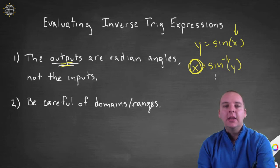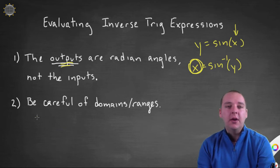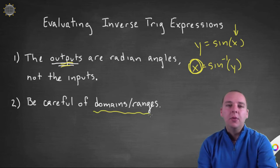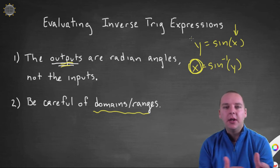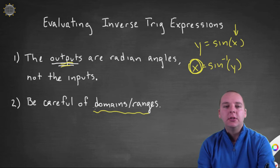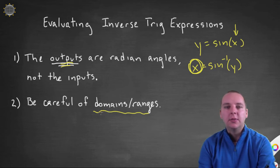The second thing that we have to be very careful about is you have to be extremely careful with your domains and ranges. Because if you remember, your original trig functions were not one-to-one. They didn't have inverses, so we had to restrict the domain. And then that affected the domains and the ranges for your inverse functions. And it just winds up being a very important issue to be very careful with your domains and ranges. But we'll talk more about that in just a minute.